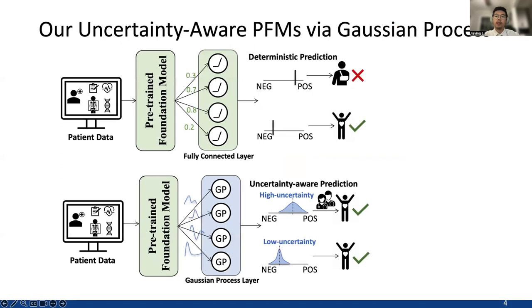To address the above-mentioned limitations, we propose Gaussian process-based foundation models. Our proposed model enables the generation of accurate predictions with instance-level uncertainty quantification. Therefore, healthcare professionals can investigate uncertain predictions and make more cautious decisions. For more technical details, we encourage the audience to take a further look at our paper. Thanks.